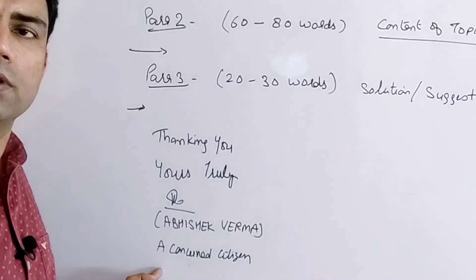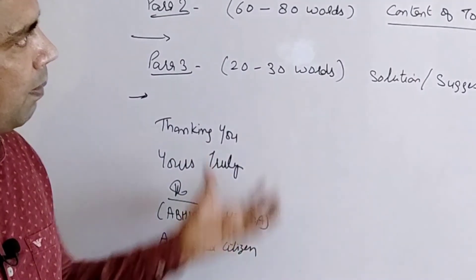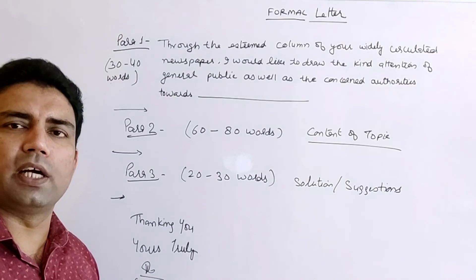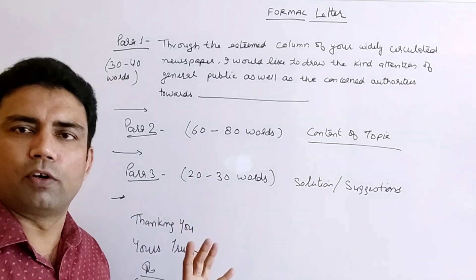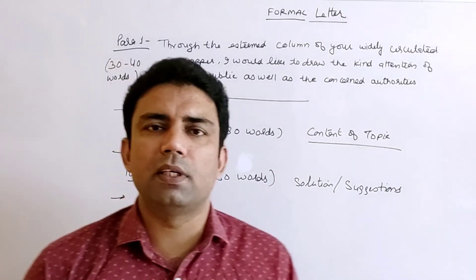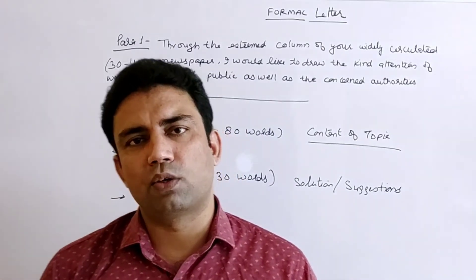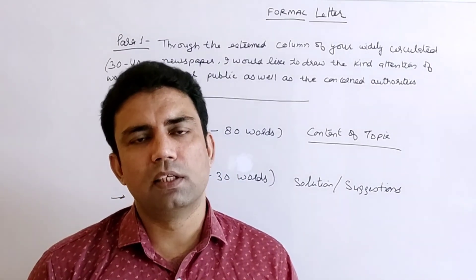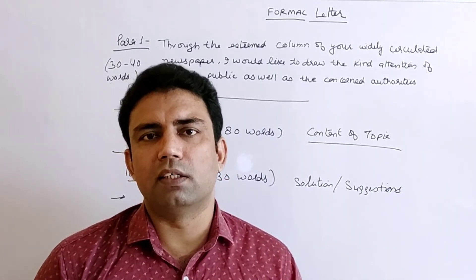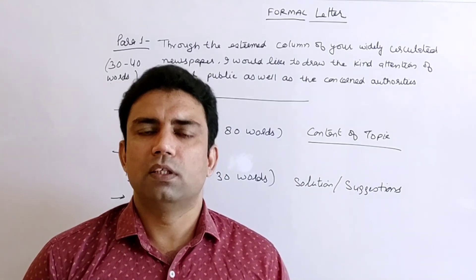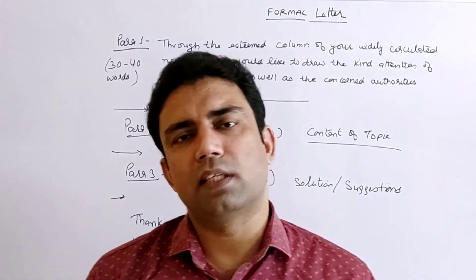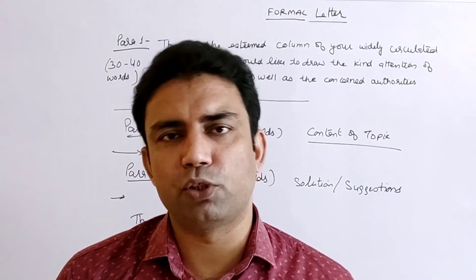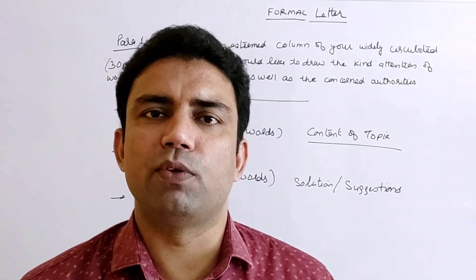After paragraph three, leave a line and write 'Thanking you, Yours truly,' then your signature, your full name in capitals in brackets, and your designation if you have one. If writing for a social purpose you can write 'A Concerned Citizen.' If you follow this format you will meet the 150-word limit and get good marks. Always pay attention to the format first, then the content. Practice a few letters and you will be able to reach the word limit. Thank you very much.